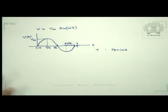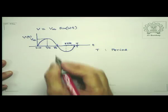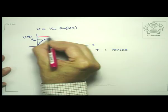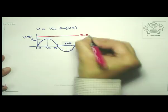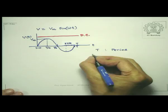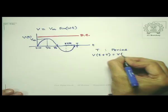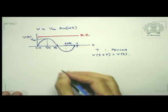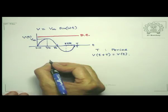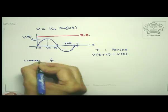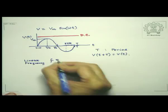If you want to compare this with what happens in a DC circuit — DC means there is no time variation. So this definition is: V(t + T) = V(t). Now, ω is related to the linear frequency. The linear frequency f is equal to 1/T, and ω then is 2π times f, which is equal to 2π/T.